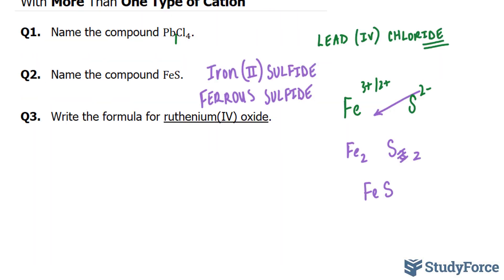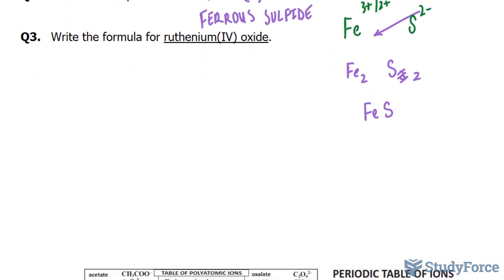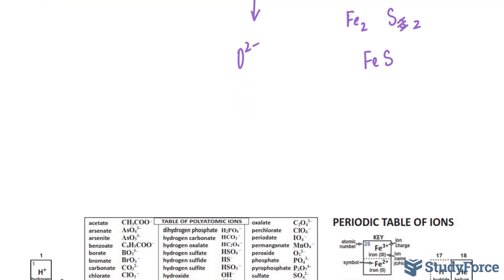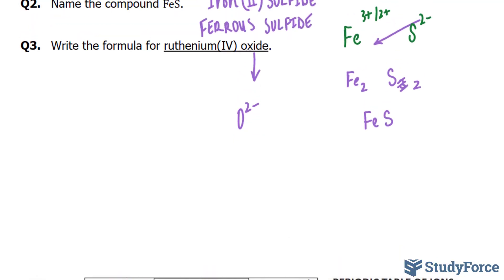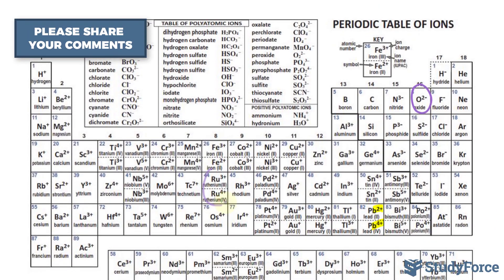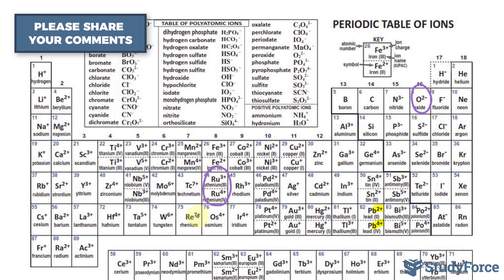In question 3, they want us to write the formula for ruthenium 4 oxide. Oxygen has a charge of 2 minus, and you can confirm that with the periodic table. Ruthenium is found right here, and it has a charge of either 3 or 4.